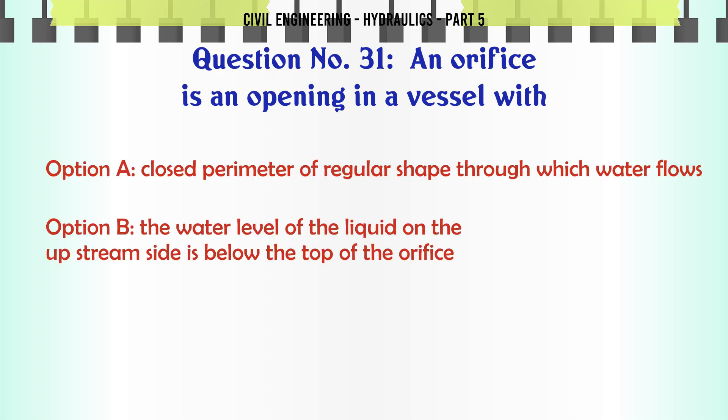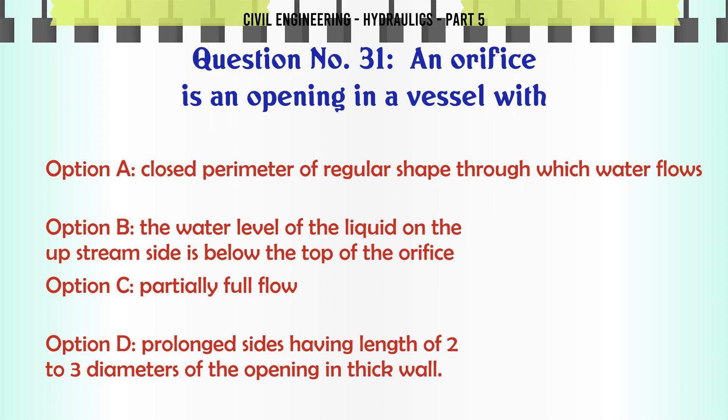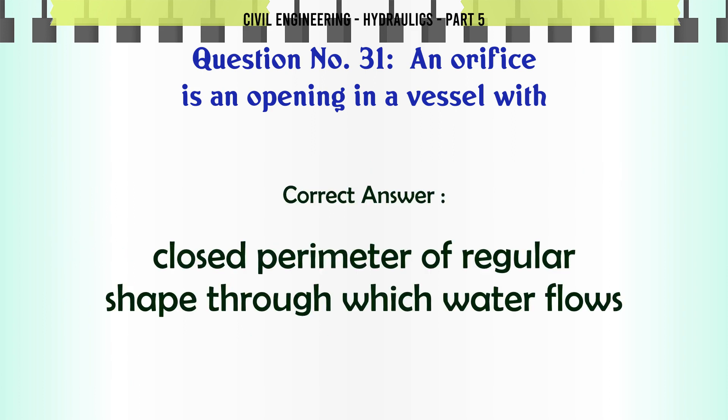An orifice is an opening in a vessel with: A. closed perimeter of regular shape through which water flows, B. the water level of the liquid on the upstream side is below the top of the orifice, C. partially full flow, D. prolonged sides having length of 2 to 3 diameters of the opening in a thick wall. The correct answer is closed perimeter of regular shape through which water flows.